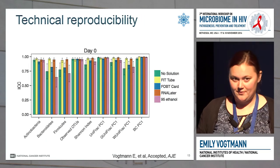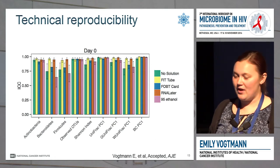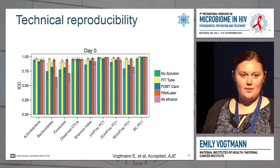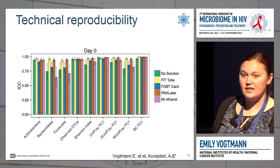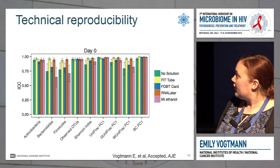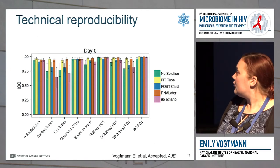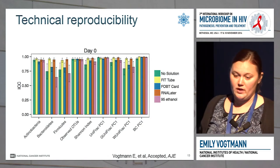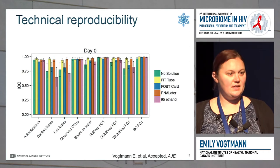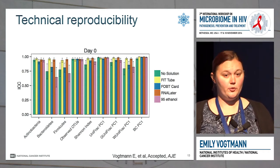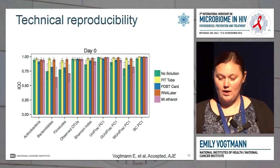The ICC should ideally be at one, meaning the samples are almost exactly the same. When we look at technical reproducibility, these really do look very good. For all of the different collection methods, they're all very close to one, which means that four samples collected in the exact same way from the exact same sample look very similar — a very good sign. So taking just one aliquot may be sufficient.